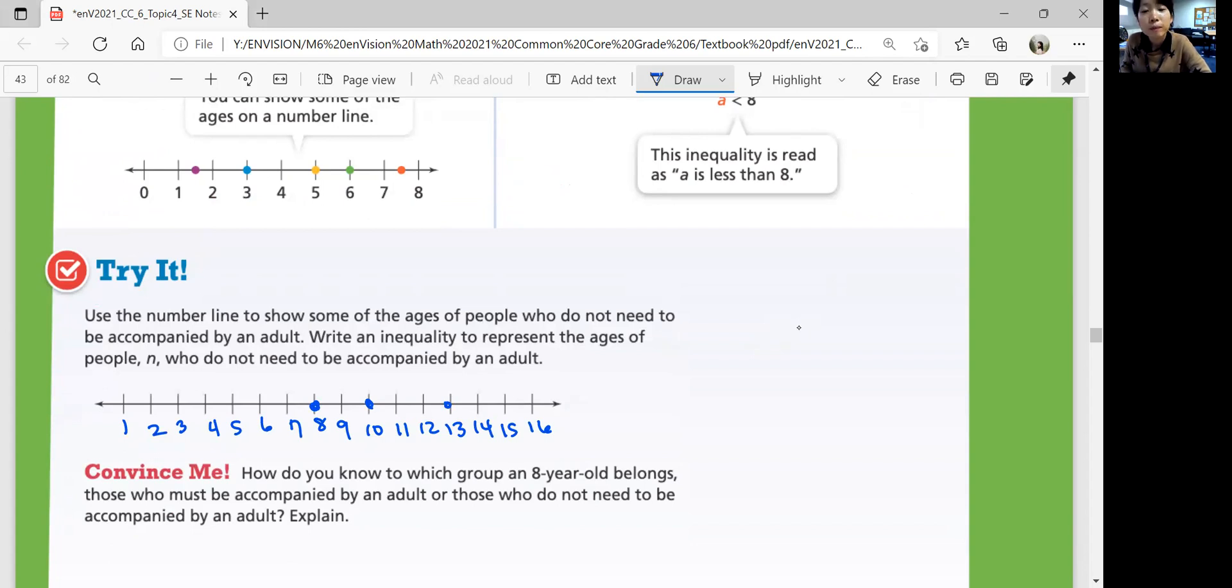Okay? So what's our inequality? A is greater than or equal to 8. It includes 8. So you have to have that equal sign, half equal sign. Okay? That means it includes 8.